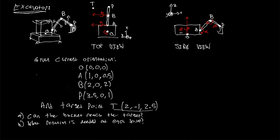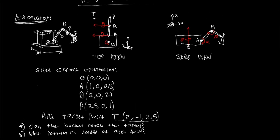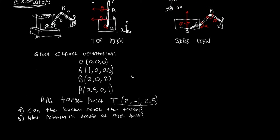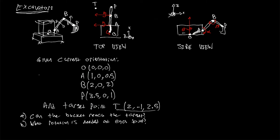First, let's check whether the bucket can even reach the target — it's not worth solving for these angles if it can't. We know that OA is a fixed link, currently oriented in the X direction. The only way to get a Y component is with a rotation about Z, since none of the other axes will produce a Y component unless the system rotates in the Z direction first.